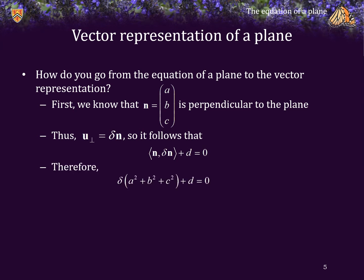Well, from the properties of the inner product, you know that this is essentially just delta times A squared plus B squared plus C squared plus D is equal to 0, and we can solve this for delta, being negative D over A squared plus B squared plus C squared.